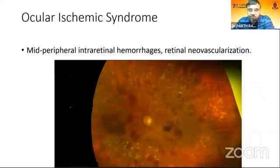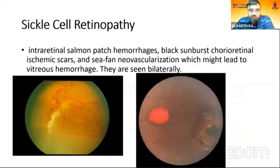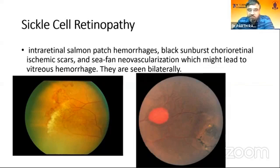In Eales disease, there will be mid-peripheral intraretinal hemorrhages and retinal neovascularization can also be seen. As seen here, blot hemorrhages extend up to the mid-periphery. In sickle cell retinopathy, there will be intraretinal salmon patch hemorrhages, black sunburst chorioretinal ischemic scars, and sea-fan neovascularization, which may lead to vitreous hemorrhages, typically seen bilaterally. The left image shows sea-fan neovascularization, and the right image shows the salmon patch and chorioretinal scar.